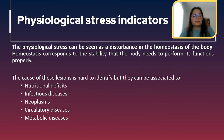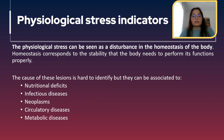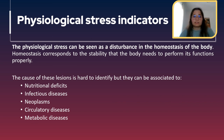Finally, we are going to talk about physiological stress indicators. Physiological stress can be seen as a disturbance in the homeostasis of the body — the stability that the body needs to perform its functions properly. In the skeleton, we have lesions considered physiological stress indicators whose cause is hard to identify. There is still discussion about this, but they can be associated with nutritional deficits, infectious diseases, neoplasms, and circulatory and metabolic diseases.